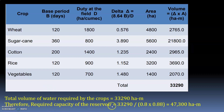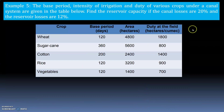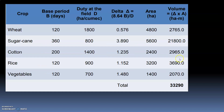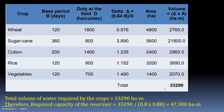Now calculate the required capacity of the reservoir: 33,290 divided by the losses. There are two types of losses. Canal loss is 20%, so only 80% water is available (0.8). Reservoir loss is 12%, so 88% is available (0.88). Dividing 33,290 by (0.8 × 0.88) gives 47,300 hectare-meters.